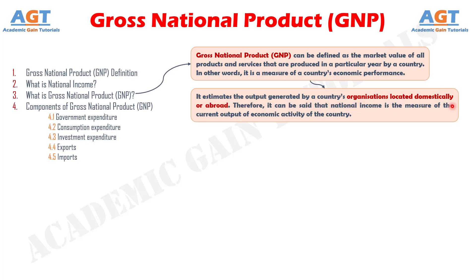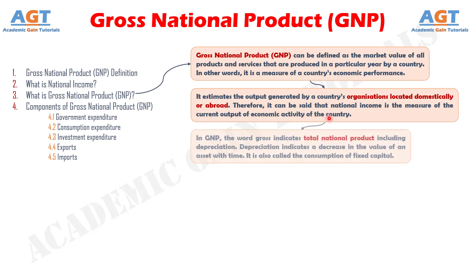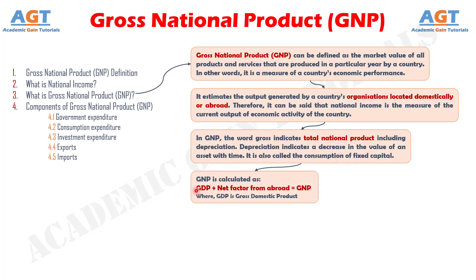National income is the measure of the current output of economic activity of the country. In GNP, the word Gross indicates total national product including depreciation. Depreciation indicates a decrease in the value of an asset with time, and is also called the consumption of fixed capital. GNP is calculated as Gross Domestic Product, GDP, plus net factor from abroad, equals GNP.